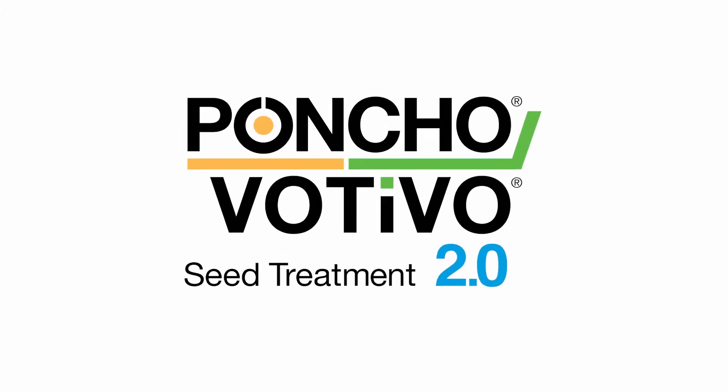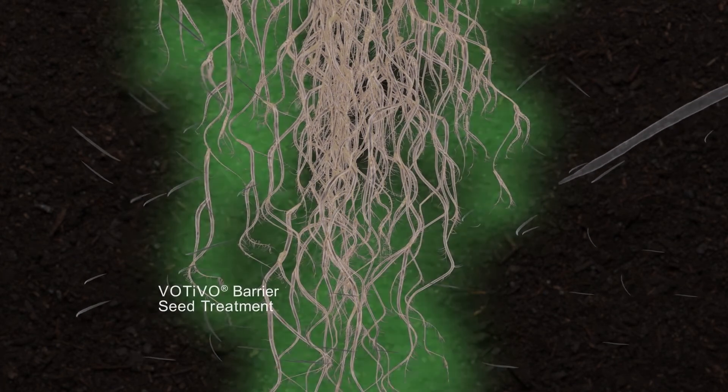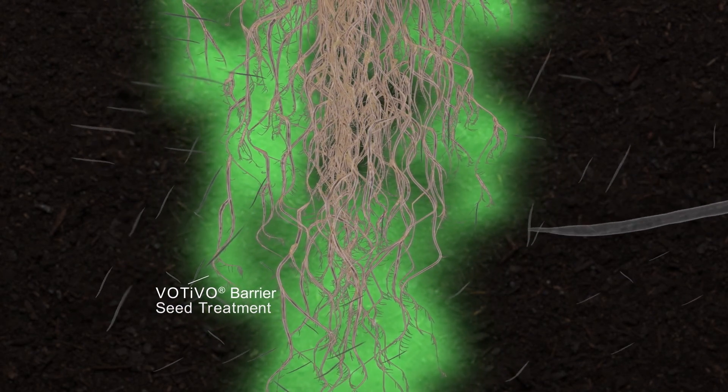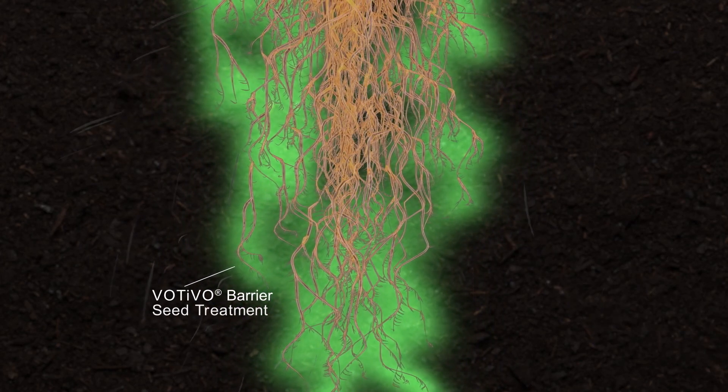Votivo contains a plant growth promoting rhizobacteria that grows on the root, creating a living barrier, blocking multiple generations of nematodes. Without the ability to infect, nematodes starve and die.